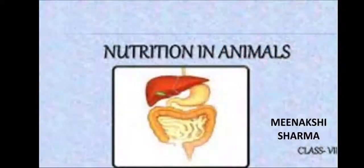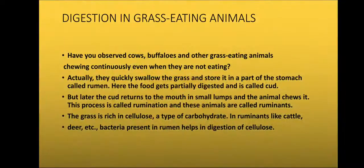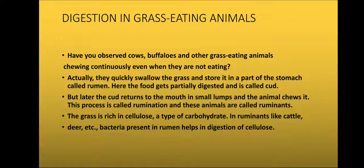We are discussing chapter two: nutrition in animals. Our next topic is digestion in grass-eating animals. You have observed that cows, buffaloes, and other grass-eating animals are chewing continuously even when they are not eating. What they actually do is quickly swallow the grass and store it in a part of the stomach called the rumen.